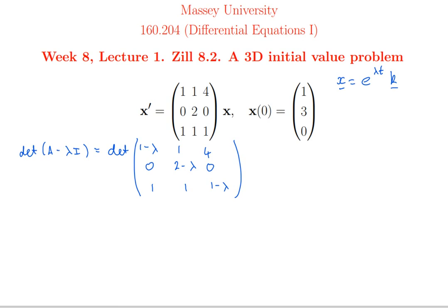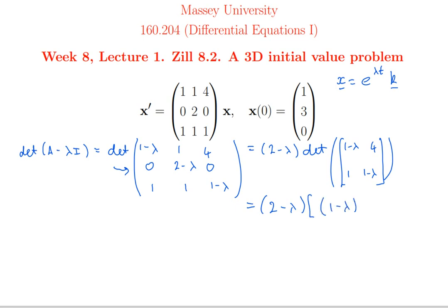There are different ways to calculate determinants of a matrix, and sometimes one way is easier than another. In this case, I notice that row 2 has a lot of zeros in it, so I should do a cofactor expansion along row 2, because it has only one non-zero number in it. That gives me the 2,2 entry, which is 2 minus λ, with a plus sign in front of it, times the determinant of the matrix with row 2 and column 2 crossed out. That cofactor gives me (1−λ)(1−λ) − 4, which evaluates to (1−λ)² − 4.